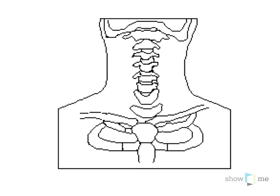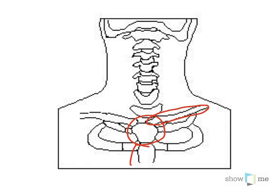In this lesson, I want to discuss the origin, insertion, and action of the sternocleidomastoid muscle. Let's begin with a quick overview of some bony anatomy, some osteology. These structures — the mastoid processes, the clavicle, and the manubrium of the sternum — will become very important as we discuss the origin, insertion, and action of the sternocleidomastoid muscle.